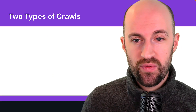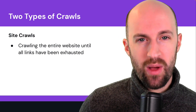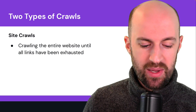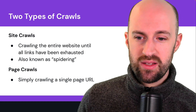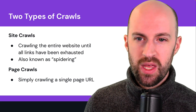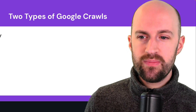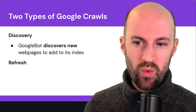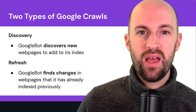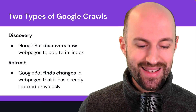Now there are two types of crawls. In general, the first one is site crawls — the entire website is crawled from top to bottom until all links have been exhausted, also known as spidering. Then there are page crawls, where a single URL is crawled. More specifically for Google crawls, there are also two types: the first is the discovery phase, where Googlebot discovers new web pages to add to its index, and the second is the refresh phase, where it updates its index by finding new changes on pages it already has indexed.